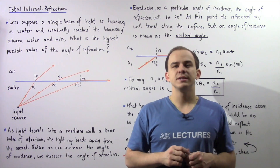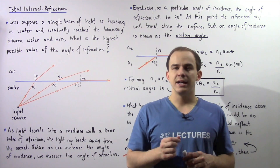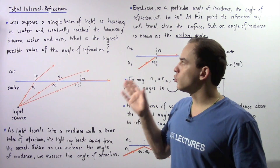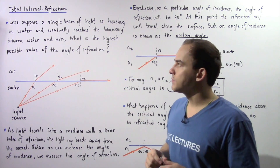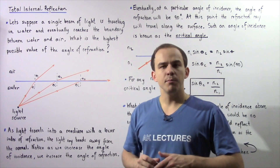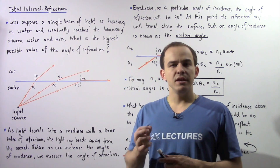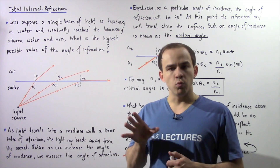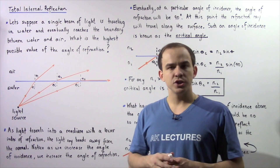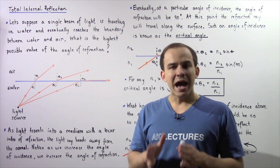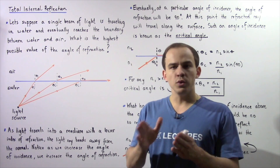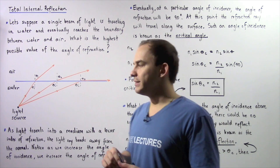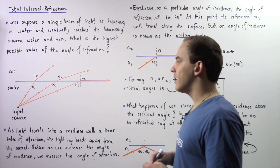In this lecture, we're going to discuss a concept known as total internal reflection. Let's suppose that a single beam of light is traveling in water and eventually reaches the boundary between water and air, as described in the following diagram.